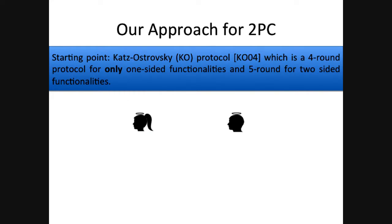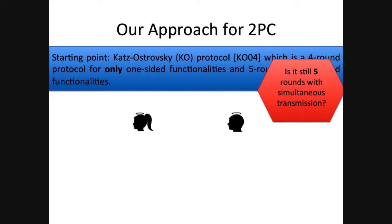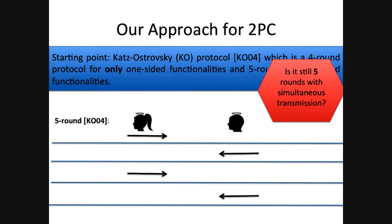Now let's see our approach to constructing the 2PC protocol. We start with the protocol of Katz-Ostrowski, which gives a five-round protocol where two parties get the output. The question is whether we can make it four rounds where both parties get the output, since we proved an improved lower bound.